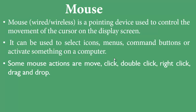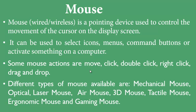Moving the mouse pointer changes cursor position. A single click performs an action, a double-click opens an application, and a right-click shows properties. Drag-and-drop allows you to move icons or selected items anywhere on screen. Different types of mouse available include mechanical, optical, laser, air mouse, 3D mouse, tactile mouse, ergonomic mouse, and gaming mouse.